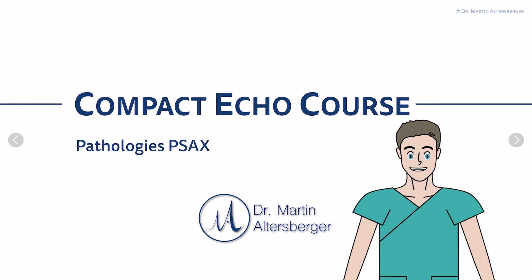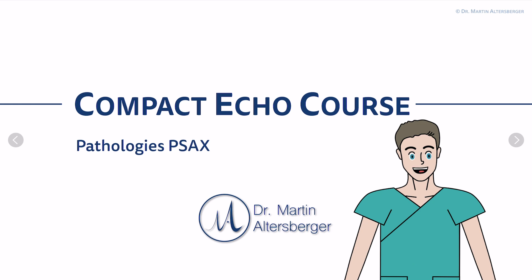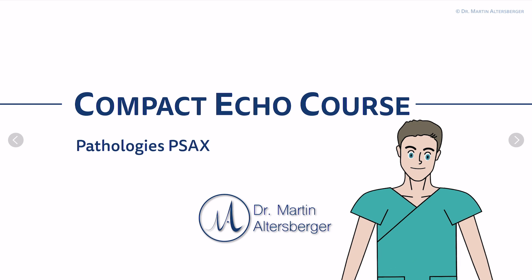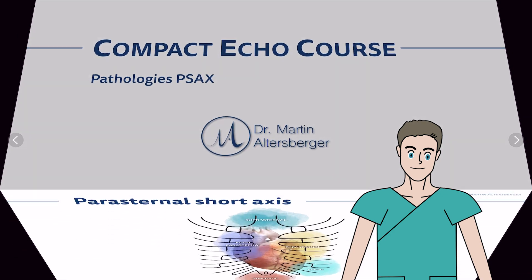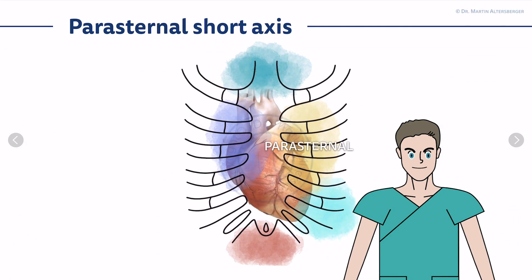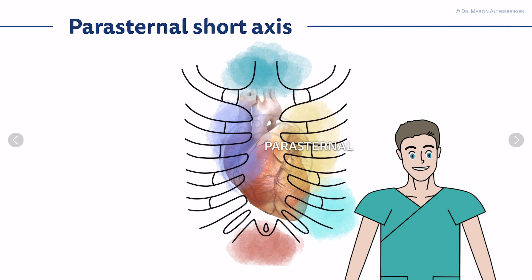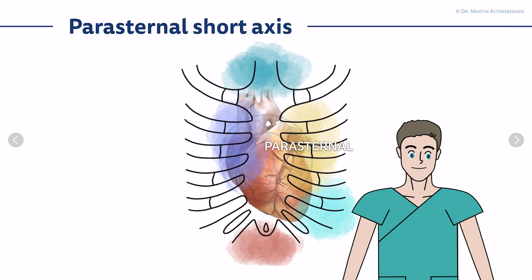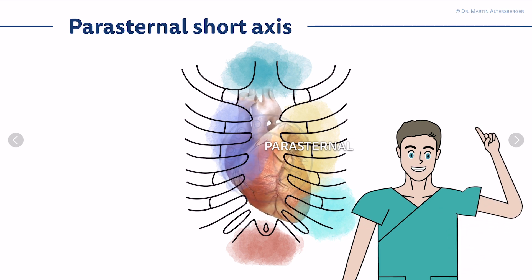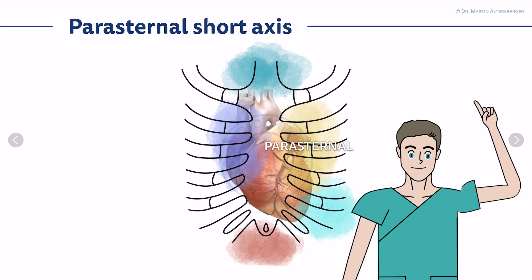In this part, we will discuss pathologies of the parasternal short axis view seen with B-mode imaging and color Doppler. If you haven't seen the normal anatomical findings of the parasternal short axis yet and want to review them, you can click the box and go back to the other videos.